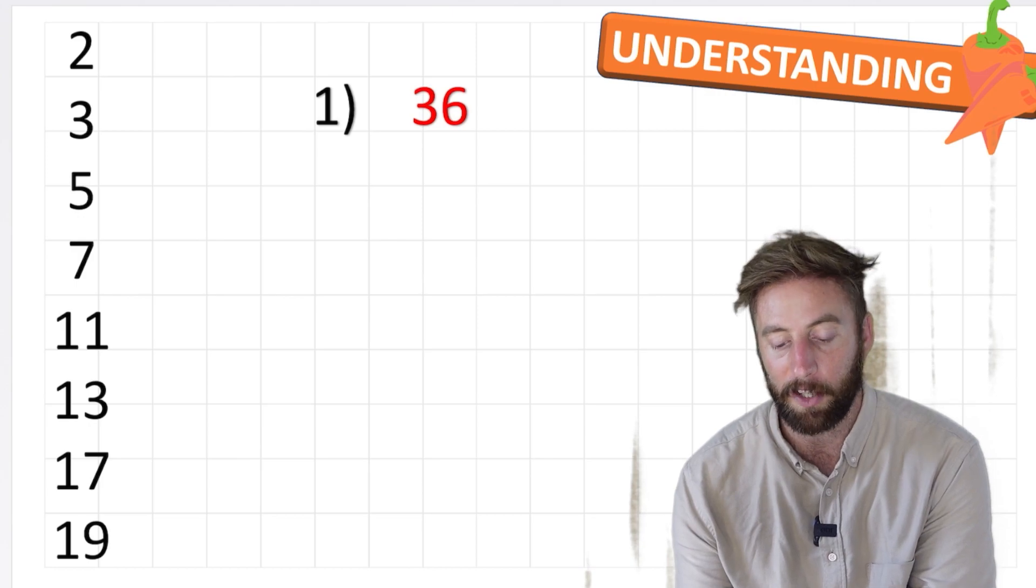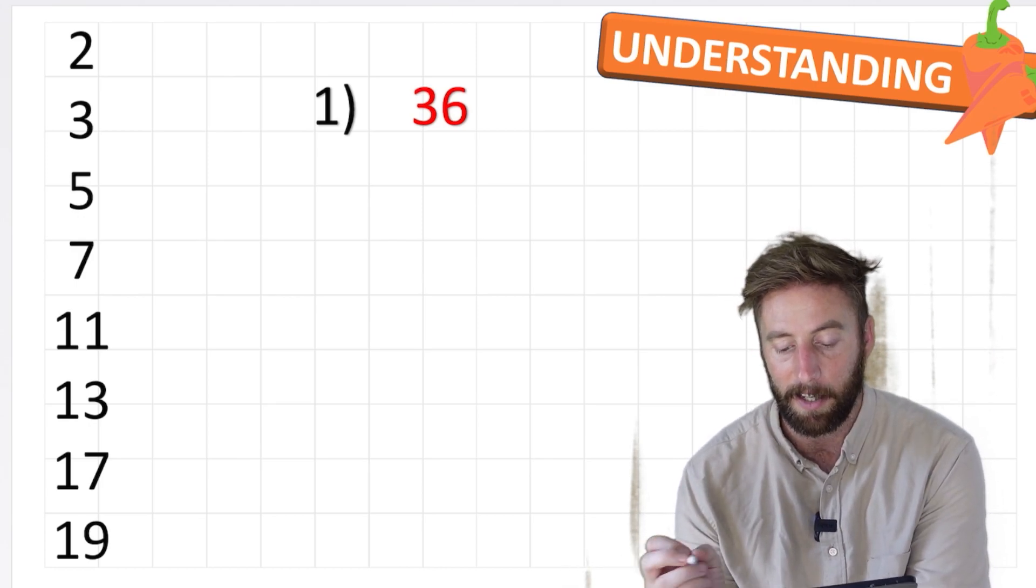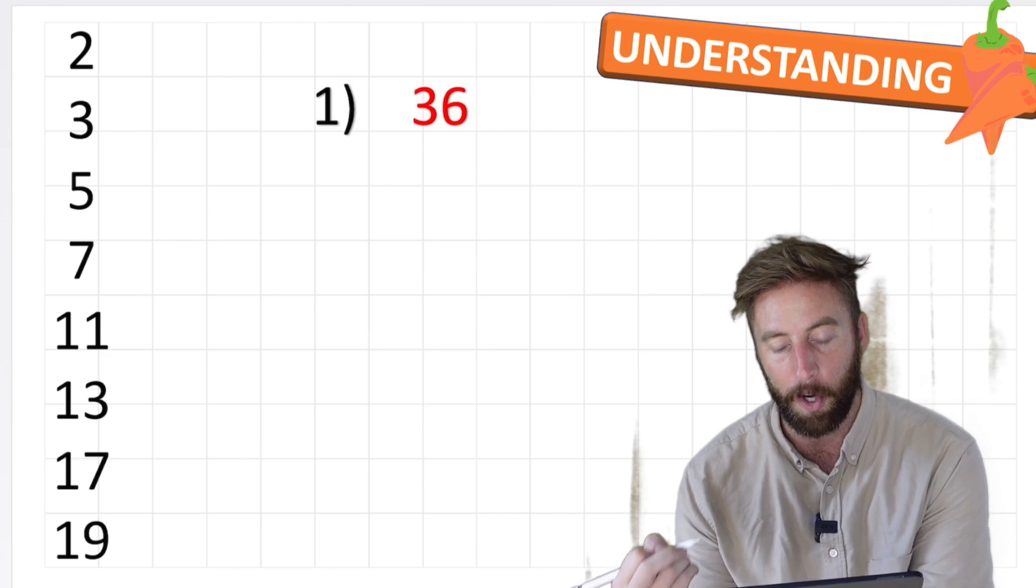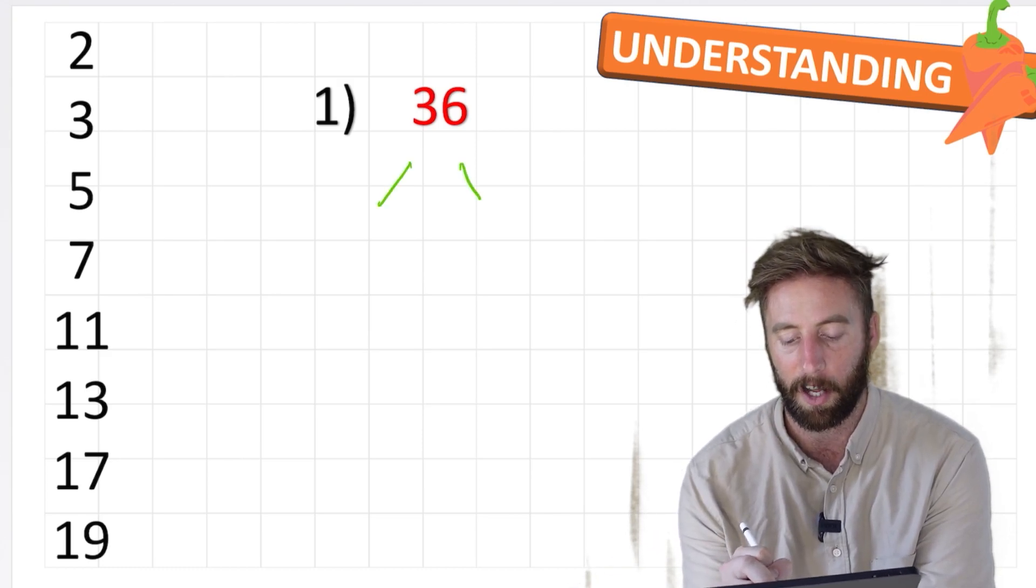Okay, let's look at a harder one. Let's look at 36. Let's find our factors for 36. Now, 36 is an even number. So we know that we can divide by 2. So let's do that. I'm going to start with 2 times 18.